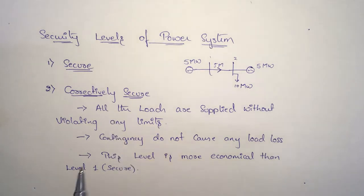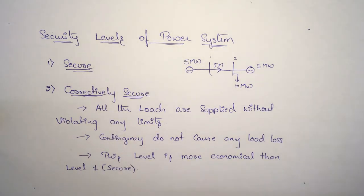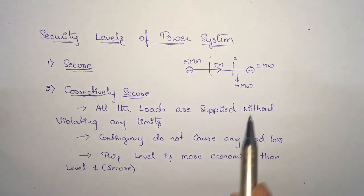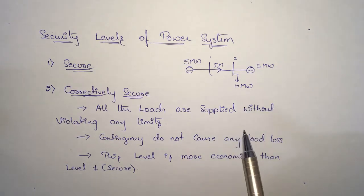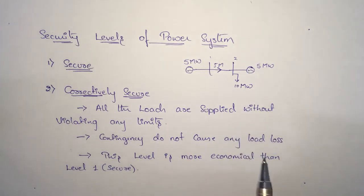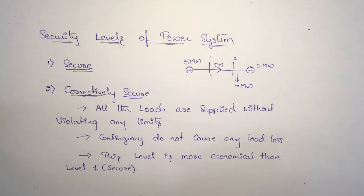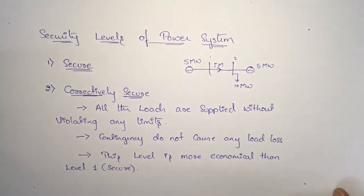In the correctively secure state, even if a fault or contingency occurs, the load is still fully supplied. This makes it more economical than the secure state.